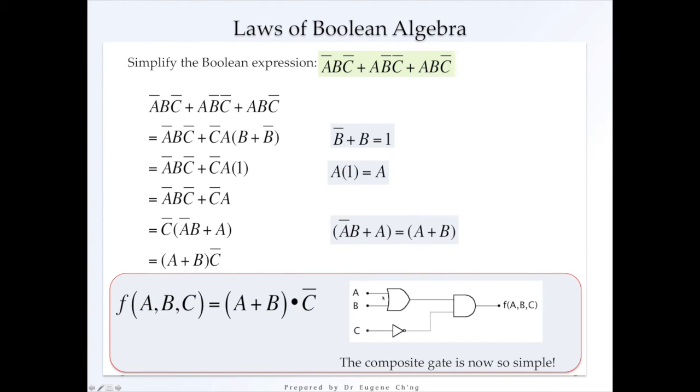And once this is simplified, we have a composite gate which we saw earlier. So this is actually the same composite we saw earlier. And that's the A OR B and NOT C.